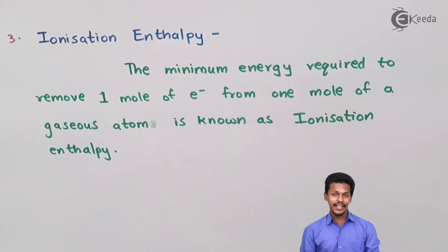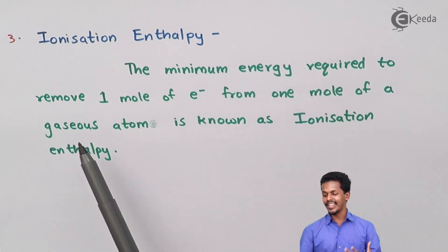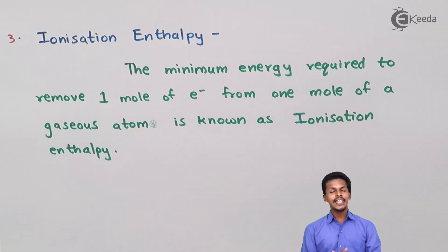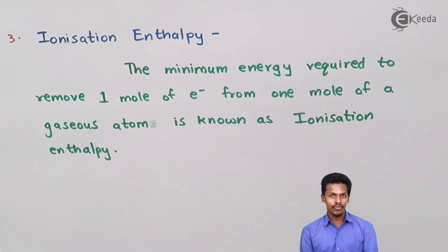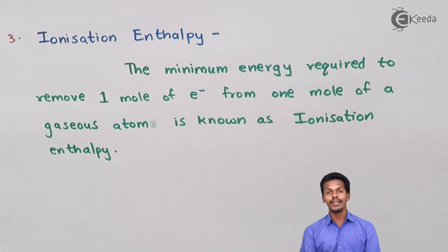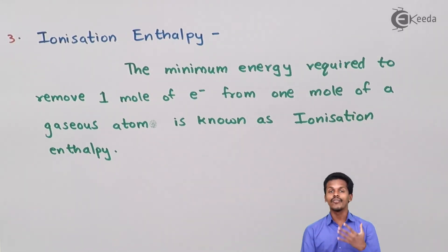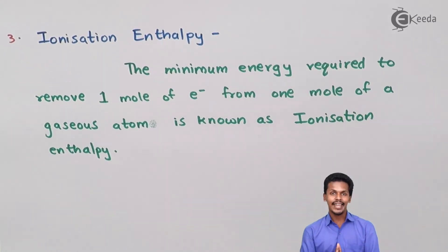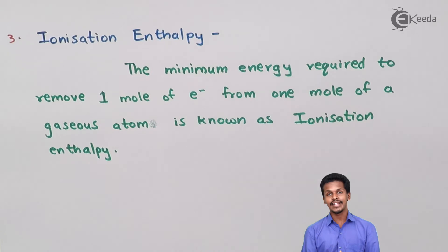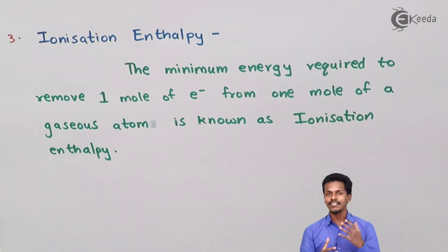The next trend is ionization enthalpy. Ionization enthalpy is defined as the minimum energy required to remove one mole of electrons from one mole of gaseous atoms. It deals with removing the outermost or loosely bonded electron of an atom. The energy required to remove the loosely bonded electron from one mole of gaseous atoms is ionization enthalpy, and its unit is kilojoules per mole.